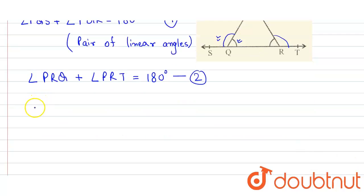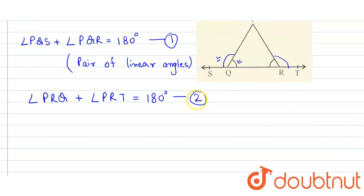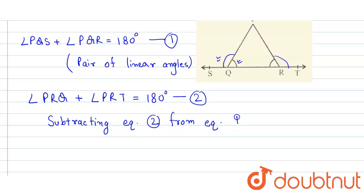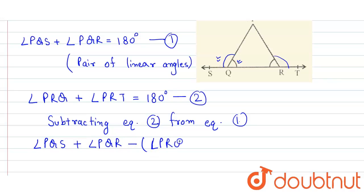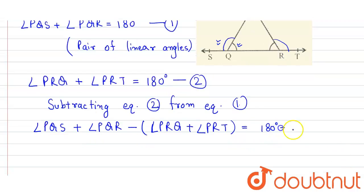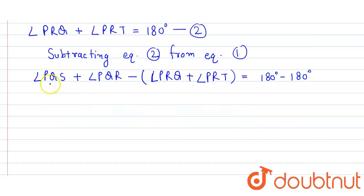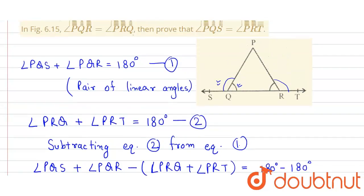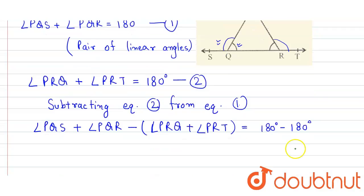Now we subtract equation number one from equation number two. On the left-hand side we get angle PQS plus angle PQR minus angle PRQ minus angle PRT, and on the right-hand side it is 180 degrees minus 180 degrees, which equals zero. Since angle PQR is equal to angle PRQ, those terms cancel.